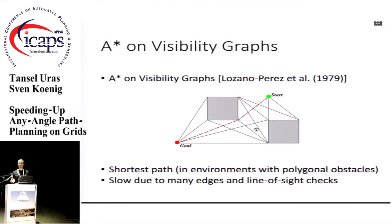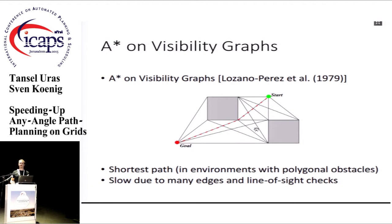Another approach is to use visibility graphs instead of grids. In visibility graphs, if your environment has only polygonal obstacles, you can place sub-goals at the convex corners of these obstacles, connect all pairs of vertices that are visible from one another, and search this graph. The path is guaranteed to be a shortest path on the continuous environment. However, the number of edges can be quadratic in the number of vertices, so it can be slow to search and construct.